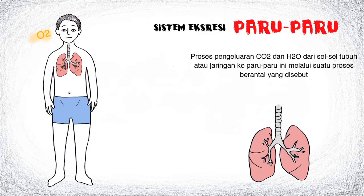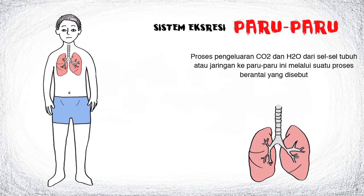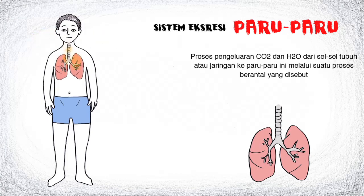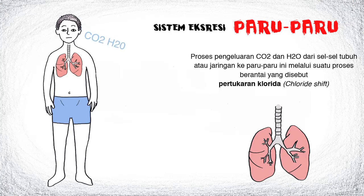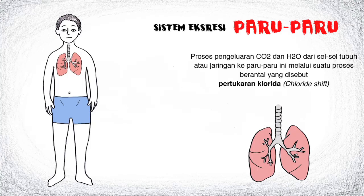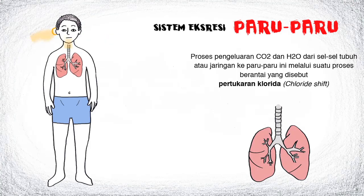Proses pengeluaran CO2 dan H2O dari jaringan sel-sel tubuh ke paru-paru ini melalui suatu proses berantai yang cukup kompleks, yang disebut pertukaran klorida atau chloride shift. Pertukaran klorida melibatkan peran sel darah merah dan plasma darah. Materi yang diekskresikan dari paru-paru ialah sisa metabolisme CO2 dan uap air.